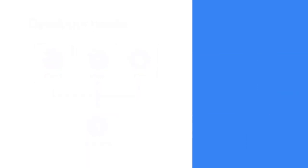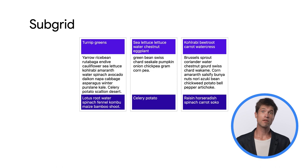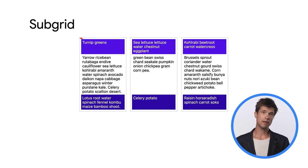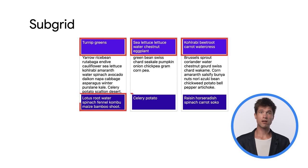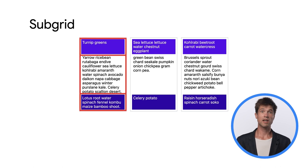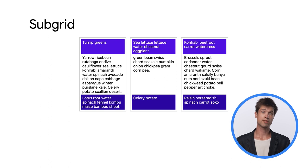CSS Grid is a core building block for modern web layouts, replacing many older techniques and workarounds. Sub Grid makes it possible to align items in nested grids to a parent grid. For example, in this card layout, each card has a header and footer aligned with adjacent cards' headers and footers, even though each card has an independent grid. Sub Grid has been available in Firefox for a long time and is now coming to all browsers.